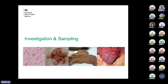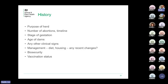For the last section, we'll have a quick run through which samples to take and how to investigate. As ever, history is so important. The purpose of the herd is really important — risk factors are clearly different in dairy herds from suckler herds. We want to know the number of abortions: is it exceeding our expectations? Two percent is probably acceptable, but some farmers report really no abortions. What's the timeline — are we dealing with an abortion storm? What stage of gestation did the abortions occur? Some causes tend to occur later in gestation; Neospora would peak in the second trimester or slightly later.